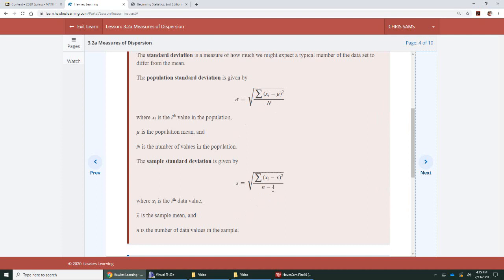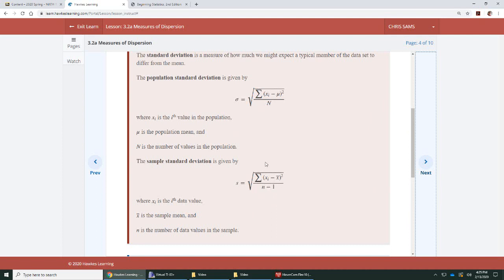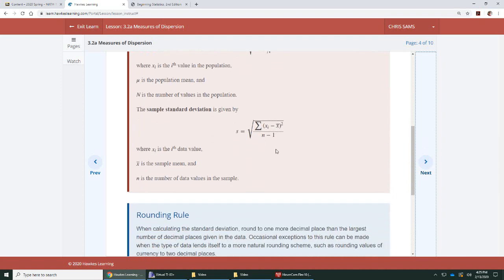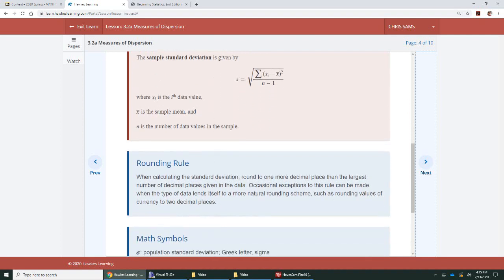This n minus one is really described in a later course. It's kind of advanced to describe here. But basically, you use n minus one to get rid of bias. And we'll be talking about bias later on in Chapter 8 and 9. These are the formulations. We're going to do it in the calculator. The rounding rule is always go to one more decimal place than what you need.